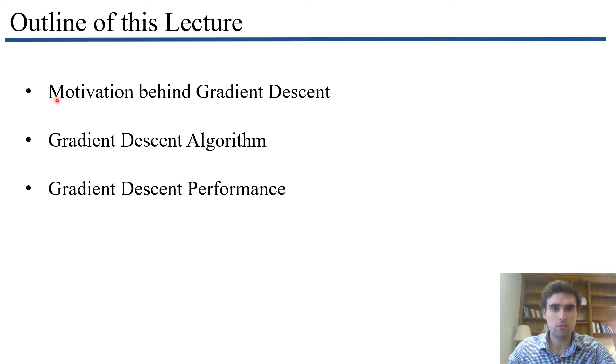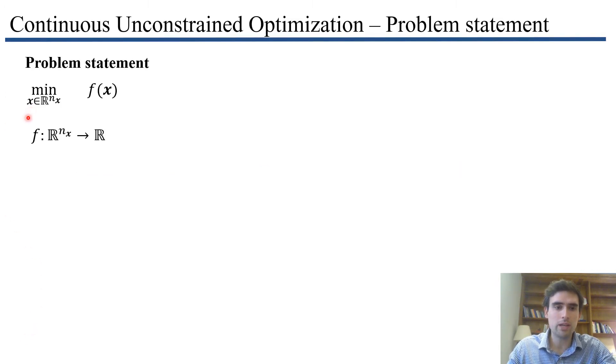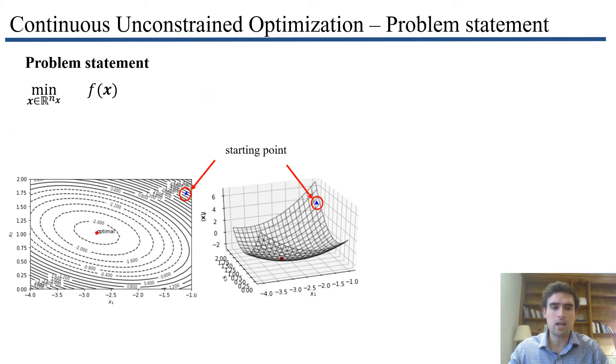We'll start by giving motivation about what gradient descent is and how it's derived, then discuss the actual algorithm, and after that say something about its performance. First, the problem statement: we're solving an unconstrained optimization problem where we have some scalar function f, which is a function of vector variable x. The idea is we have a bowl-shaped function with some starting point, and an iterative procedure where we progressively take steps to make our way to some optimal point.